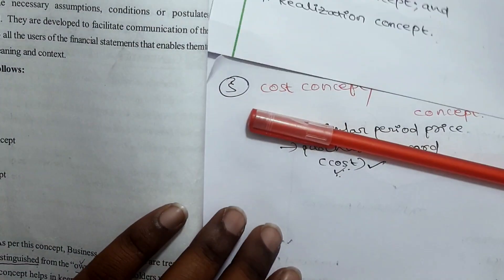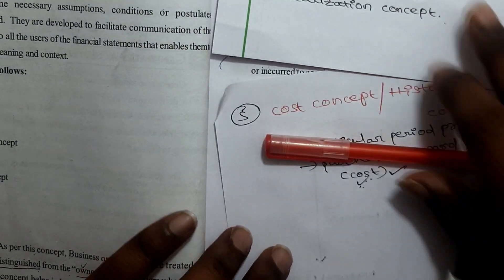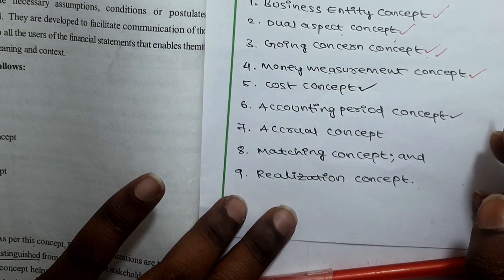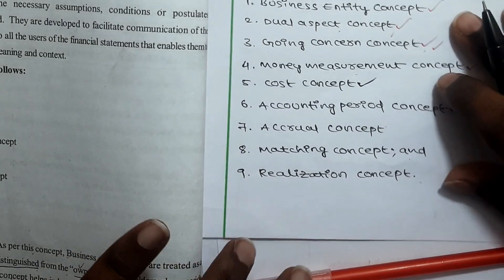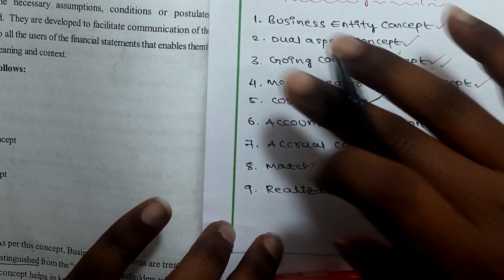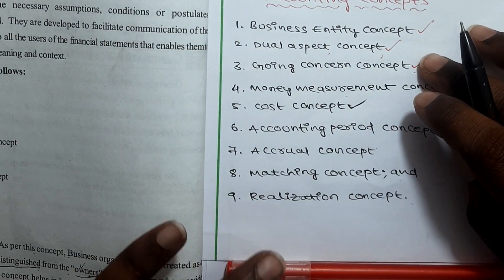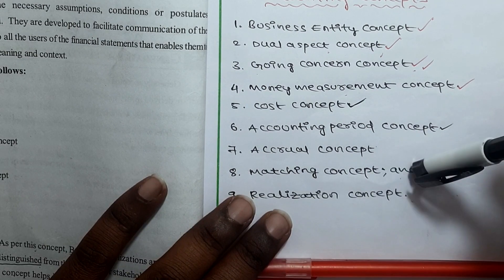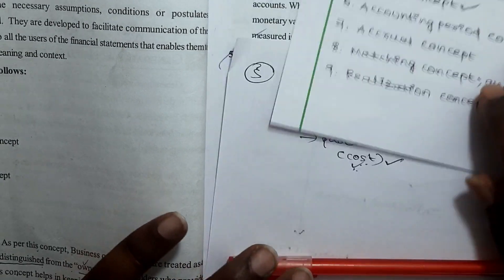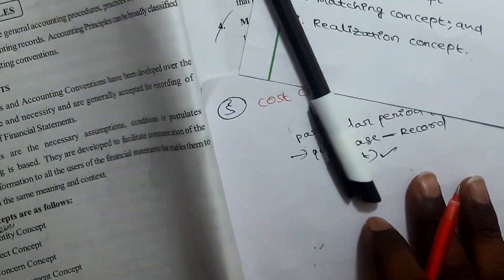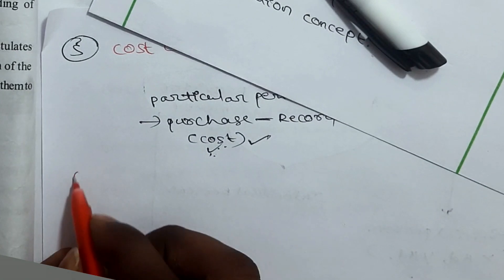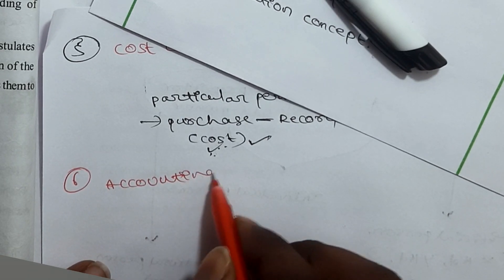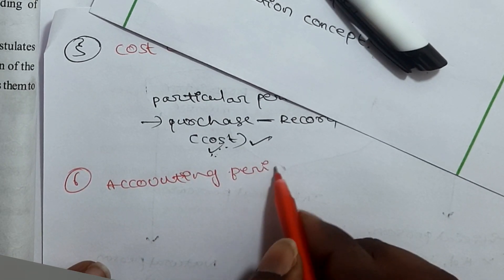The sixth topic is the Accounting Period Concept. In general, the concept relates to accounting periods. At the end of each accounting period, financial records are maintained and statements are prepared.